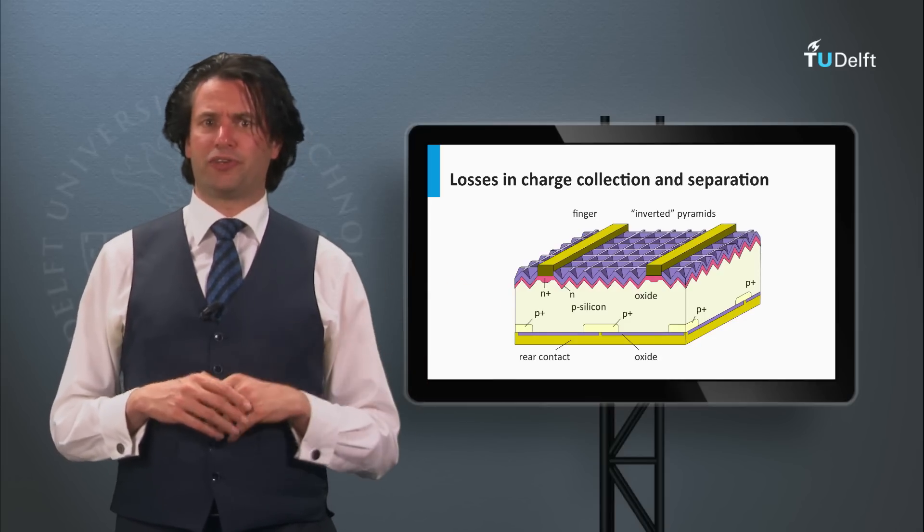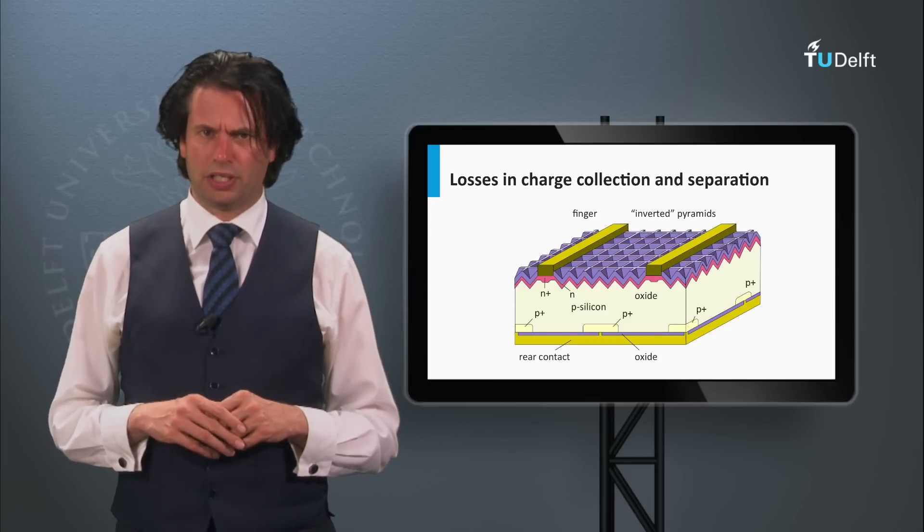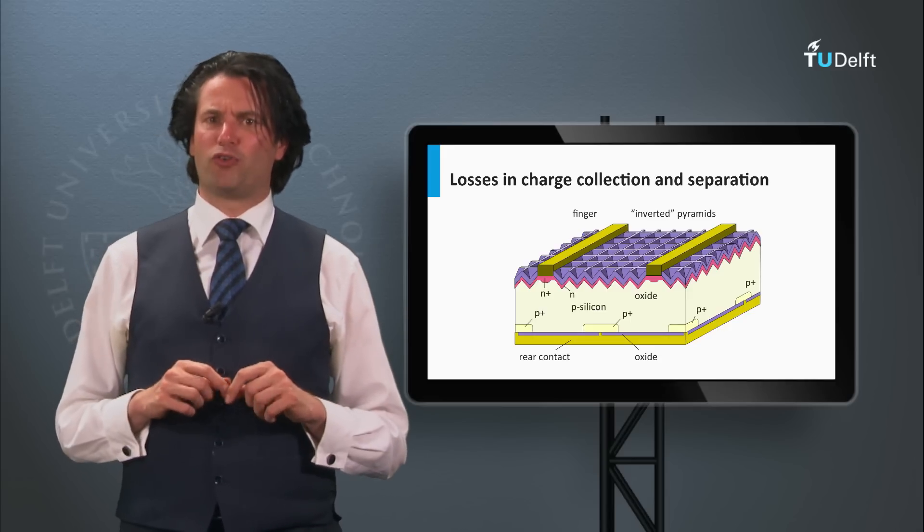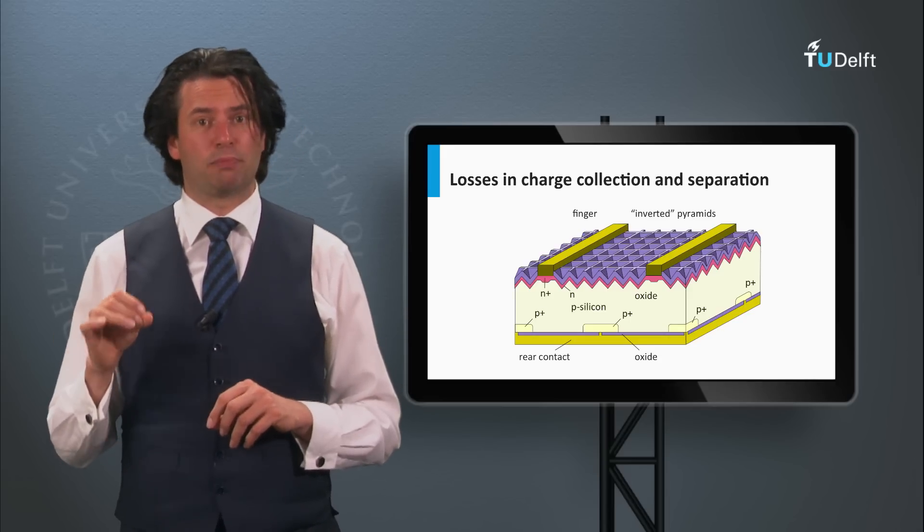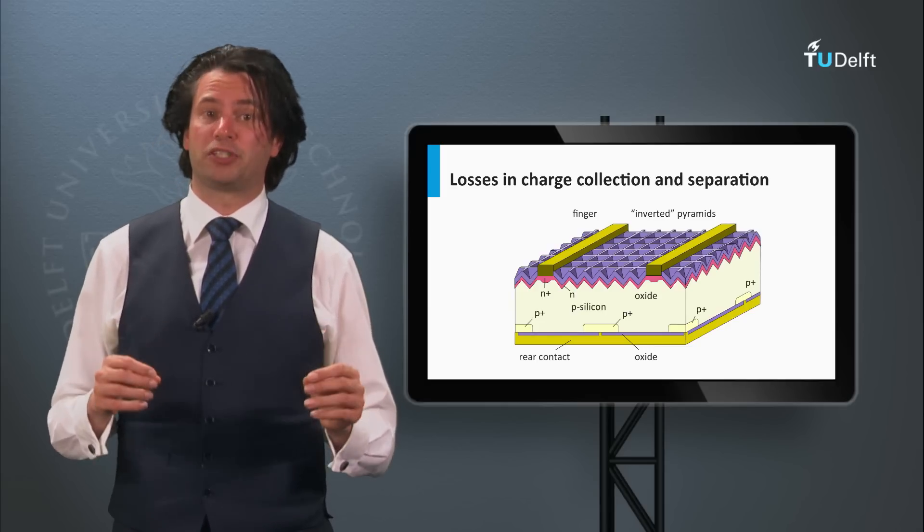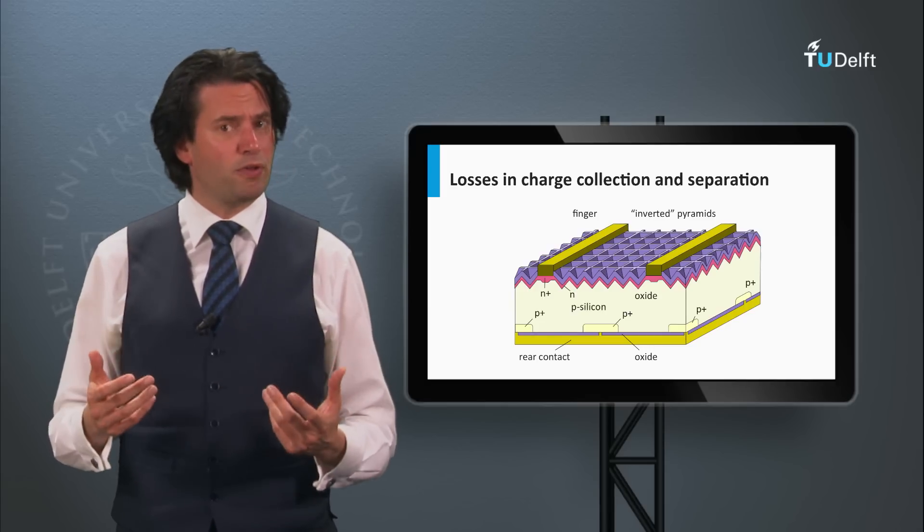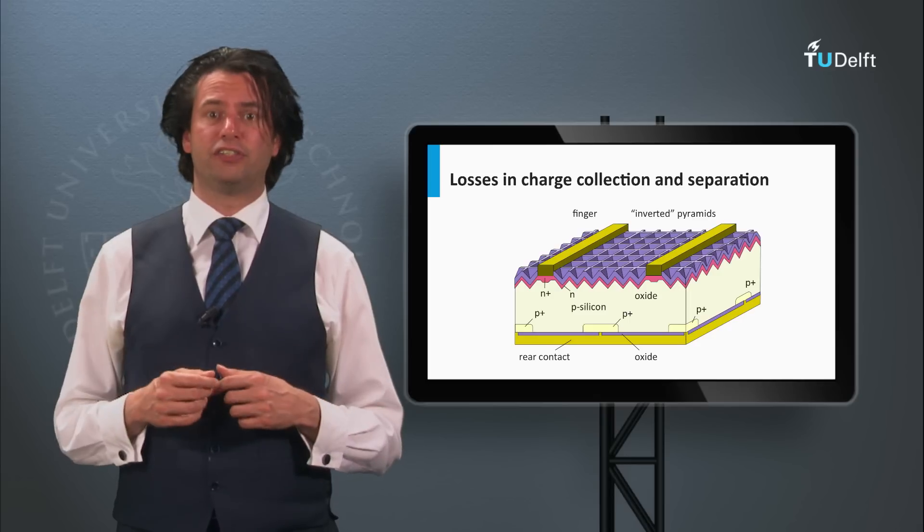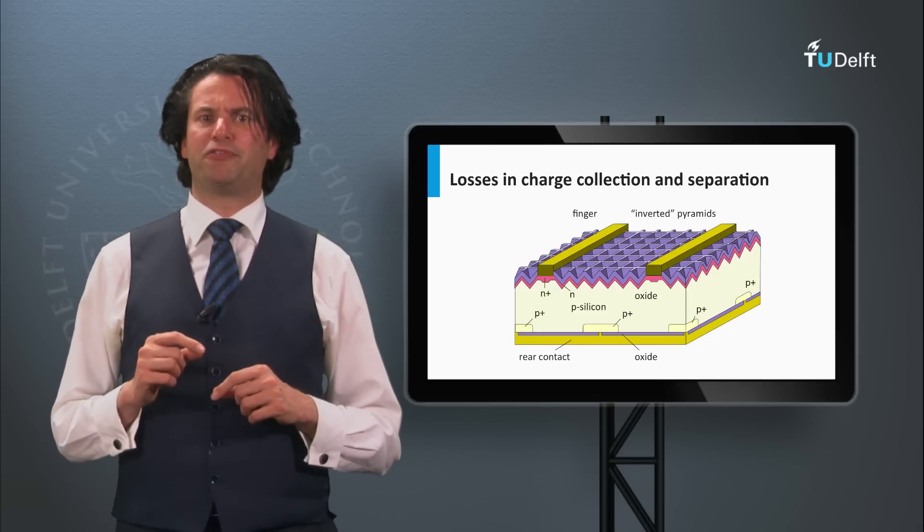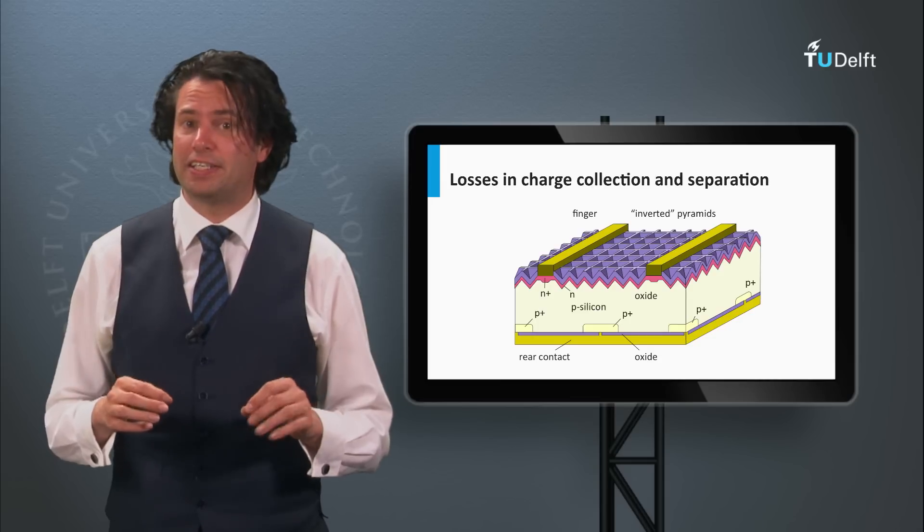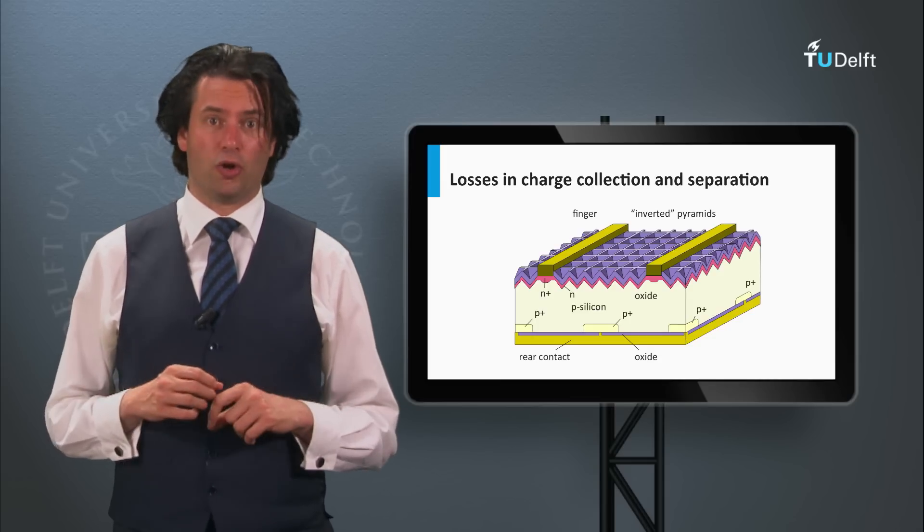Here you see an illustration of the PEARL concept, which uses P-type float zone silicon wafers. This concept has approached a conversion efficiency of 25% and has been an example for various technologies developed afterwards. PEARL is an abbreviation for Passivated Emitter Rear Locally Diffused.